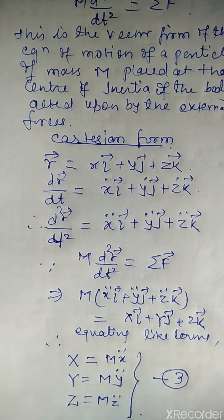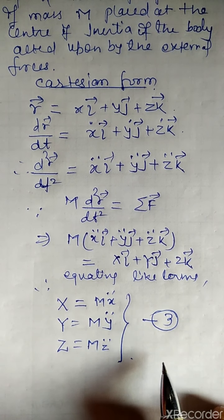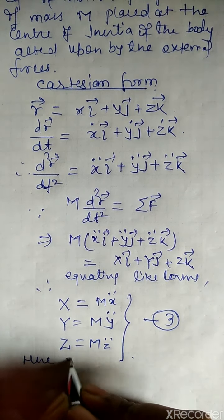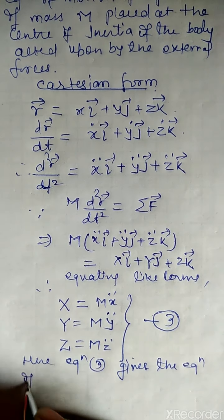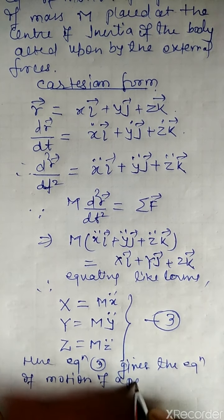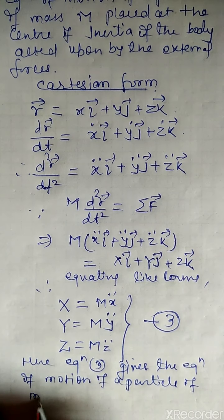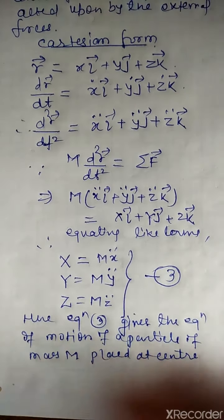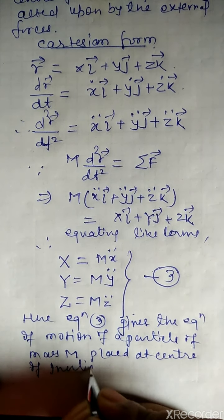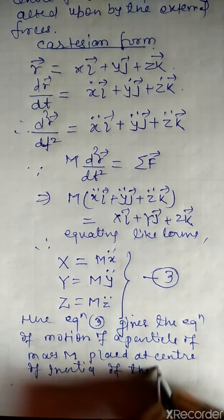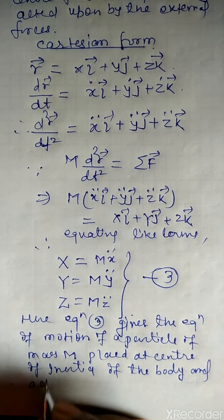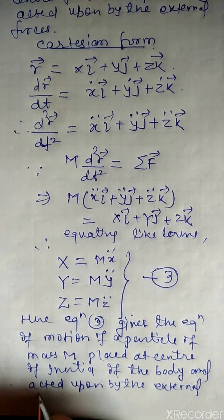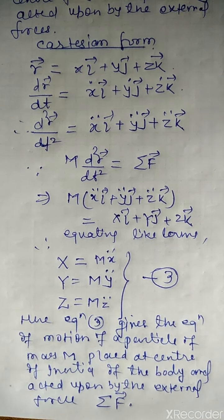This is equation number 3. Equation 3 gives the equation of motion of a particle of mass M placed at the center of inertia of the body and acted upon by the external force ΣF. Thank you.